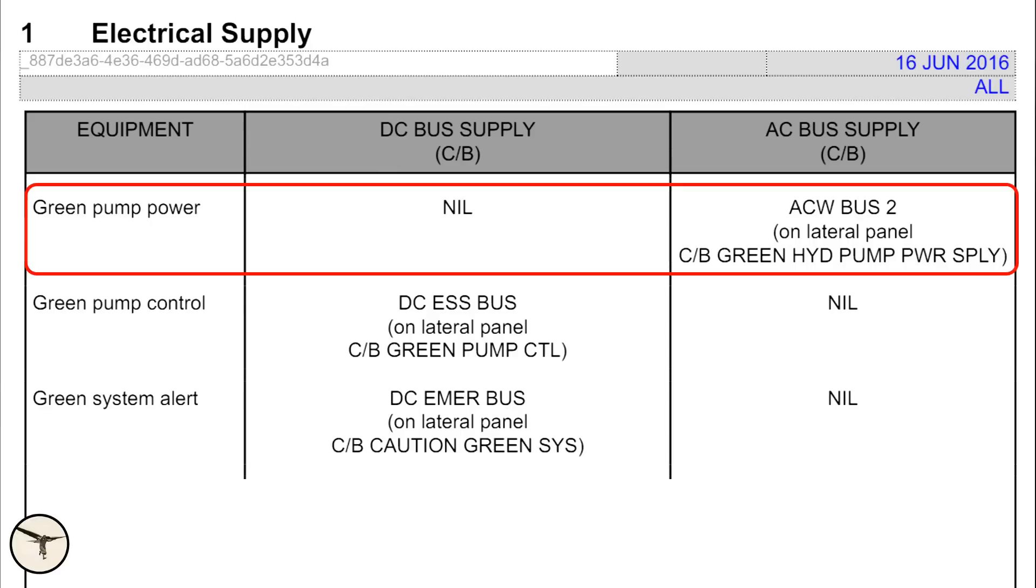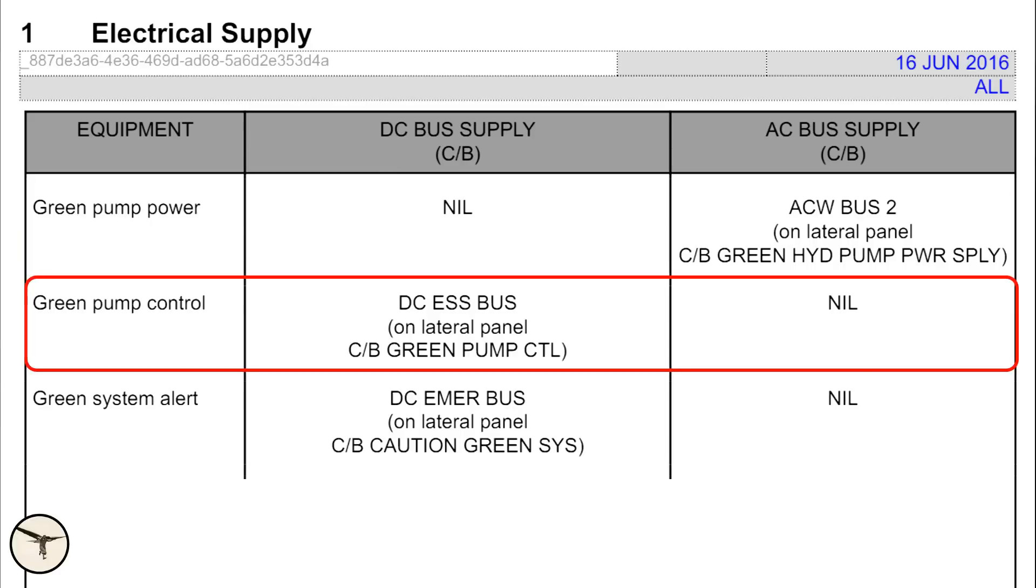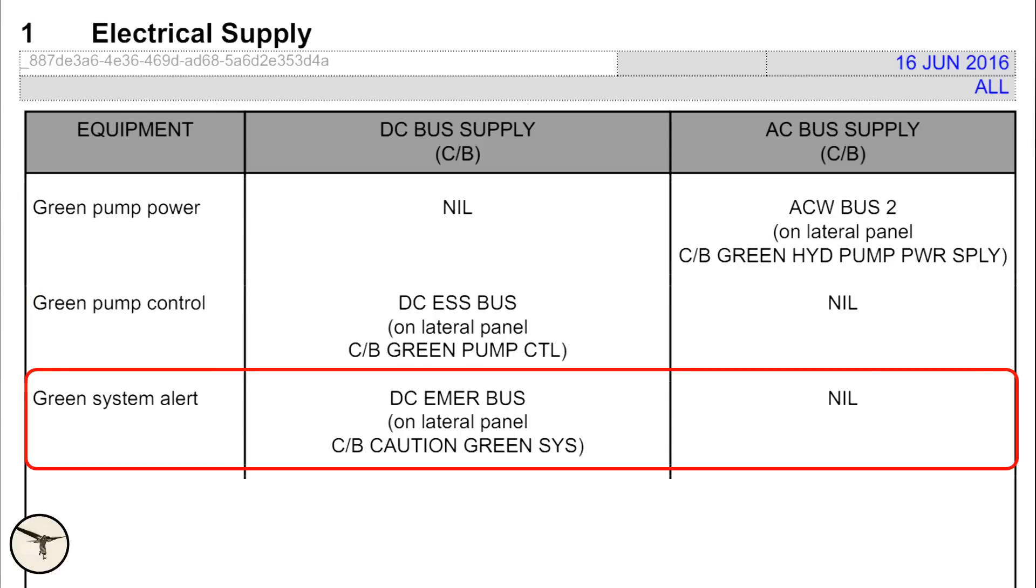Here is one example. In ATAC aircraft, the green hydraulic pump is powered by AC bus number two, controlled by DC essential bus, and monitored by DC emergency bus.